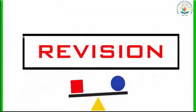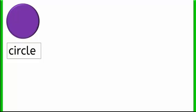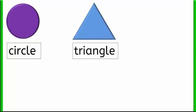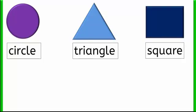Let's do a revision together. Circle — circle starts with the letter C and it has no corners. Triangle — triangle starts with the letter T and it has three corners. Square — square starts with the letter S and it has four corners.